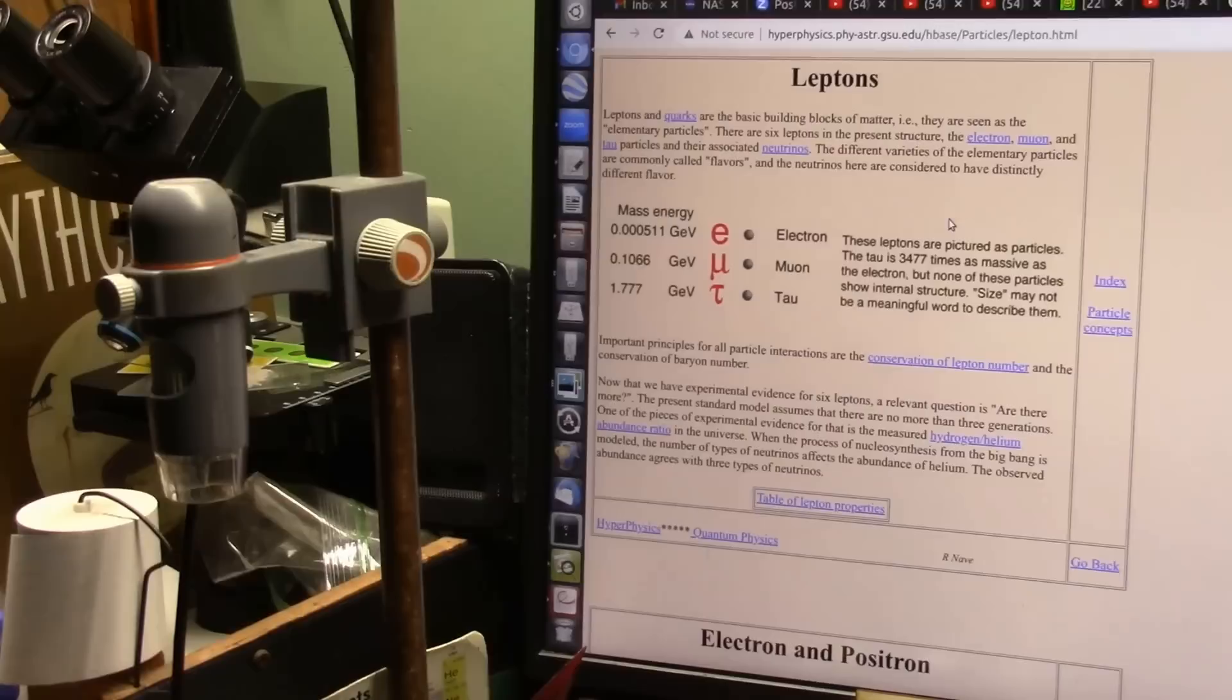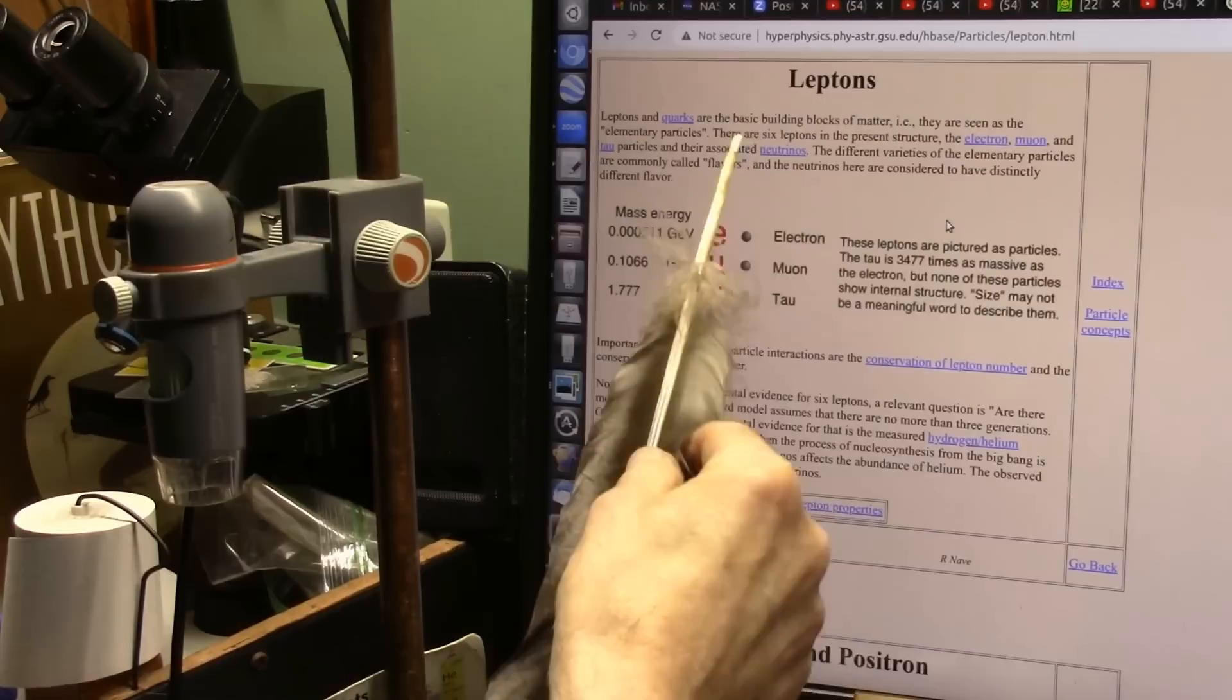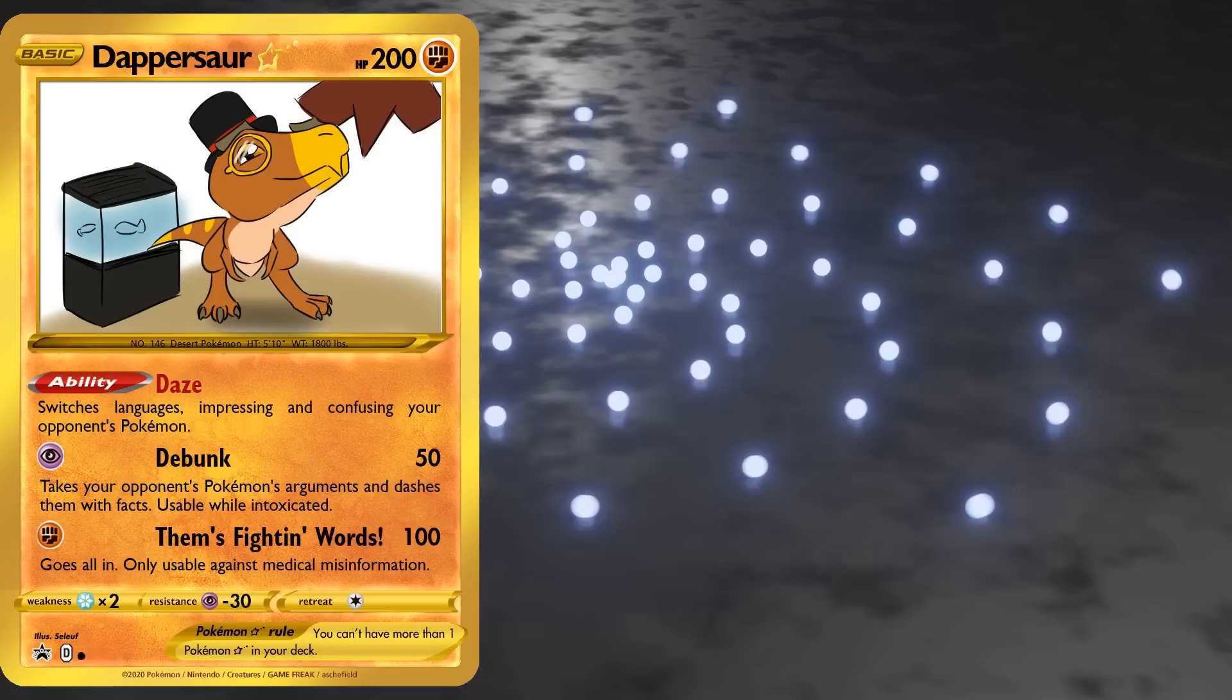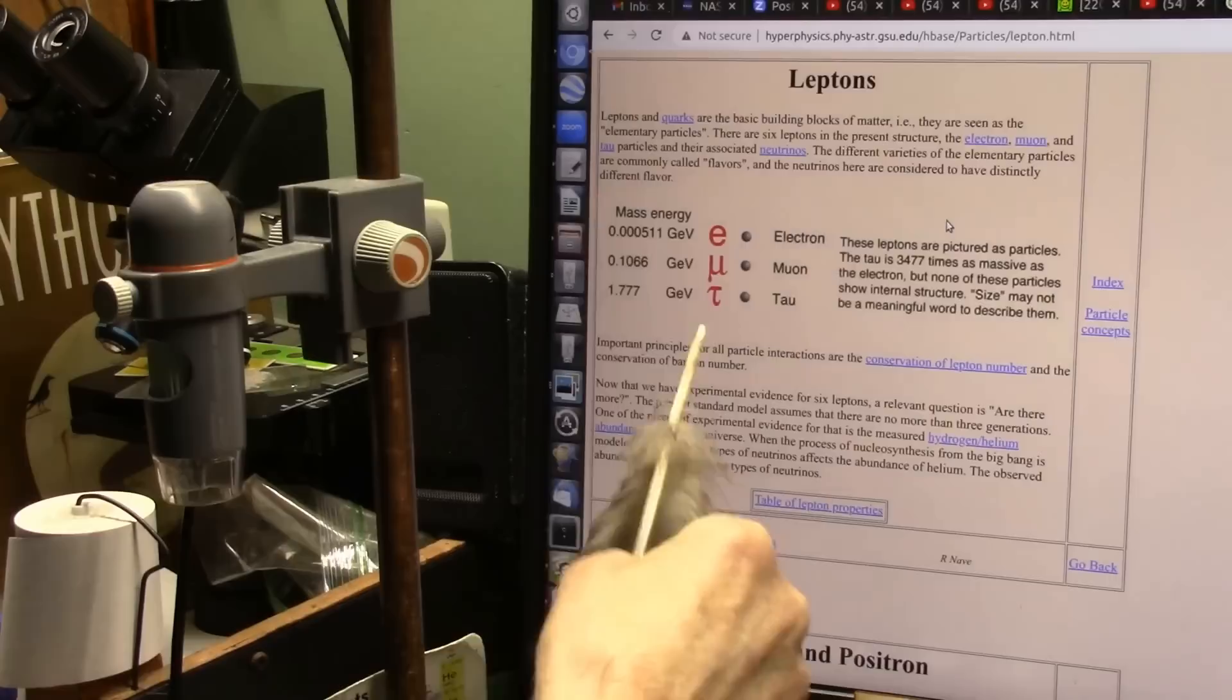In order to understand lepton universality, we have to understand what a lepton is. Well, they are collectively these particles. Nope, they're those particles and their associated neutrinos. Definitionally, they're elementary particles of half-integer spin that do not undergo strong interactions. That is, they can't interact with the strong nuclear force.